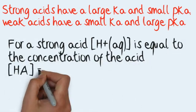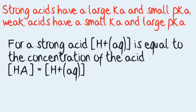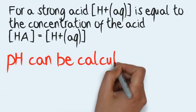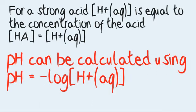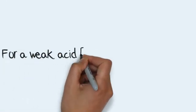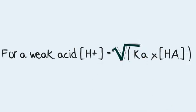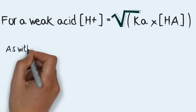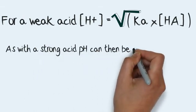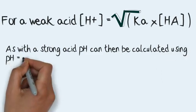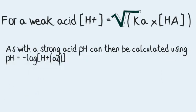For a strong acid, the concentration of H⁺ ions is equal to the concentration of the acid. Therefore, pH can be calculated using the equation: pH equals the negative log of the concentration of the hydrogen ions. For a weak acid, the concentration of H⁺ ions is the square root of Ka times the concentration of the weak acid. As with a strong acid, pH can then be calculated using the equation: pH equals the negative log of the concentration of the H⁺ ions.